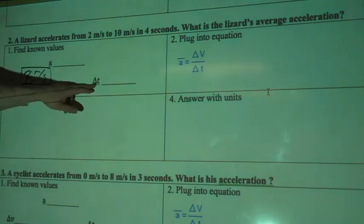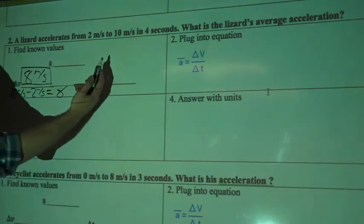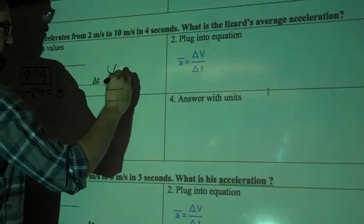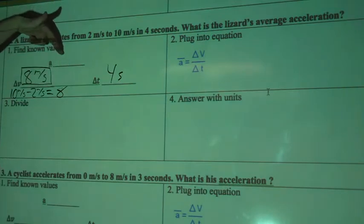So we're looking at the change in time after that. We don't know where it started, but they just tell us 4 seconds. So that's the change in time that we have, 4 seconds. And then we're finding the average acceleration. We don't know that yet.